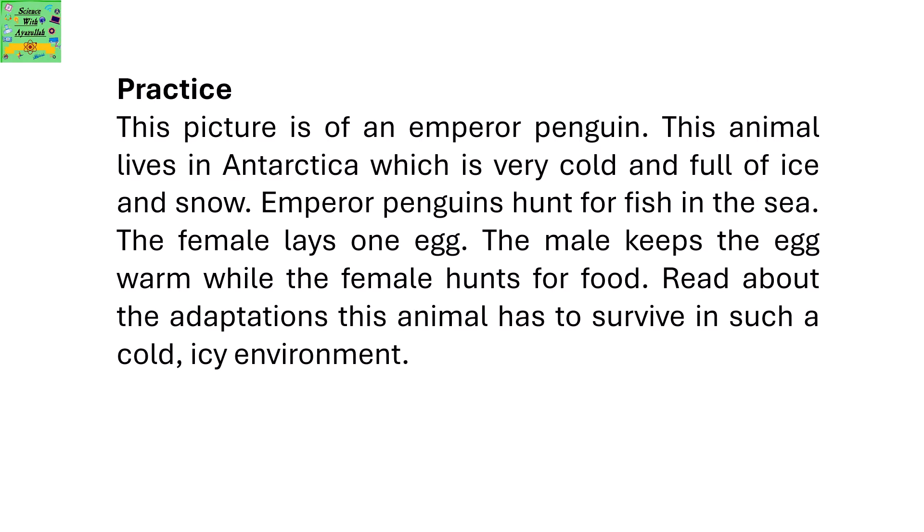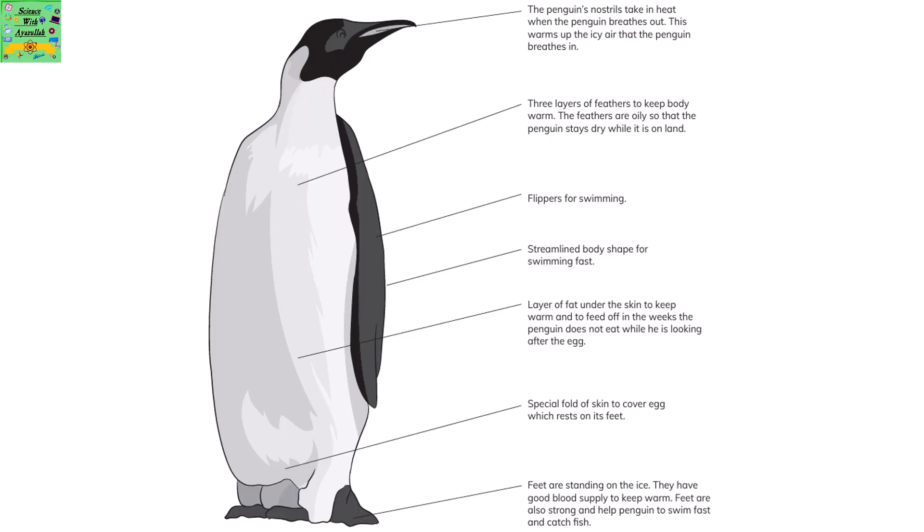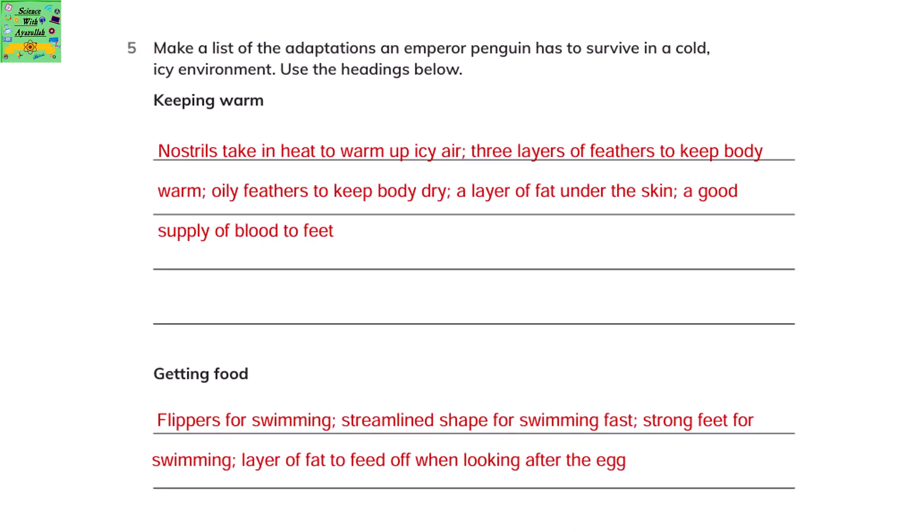Make a list of the adaptations an emperor penguin has to survive in a cold, icy environment. Nostrils take in heat to warm up icy air. Three layers of feathers to keep the body warm. Oily feathers to keep the body dry. A layer of fat under the skin to keep it warm. A good supply of blood to feed. Flippers for swimming. Streamlined shape for swimming fast. Strong feet for swimming. A layer of fat to feed off when looking after the egg.